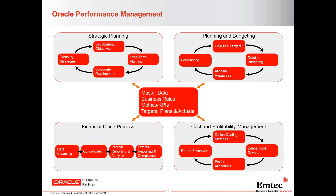These are the four pillars that the Hyperion product suite focuses on. The beauty is that all of these applications focused on different management processes are integrated, because the master data — the dimensionality of the applications, the accounts, cost centers, departments, business units, products — all live in a centralized repository. You don't need to have everything day one. You can pick and choose what your immediate need is. If budgeting and planning is your primary focus right now, improve that process — and that's where we're going to focus on today.